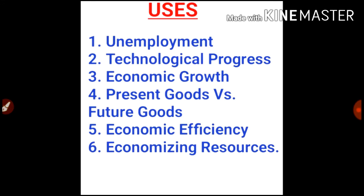The Production Possibility Curve has several applications: it illustrates unemployment, economic growth, present goods versus future goods, economic efficiency, and economic resource allocation — including areas such as healthcare and other products.